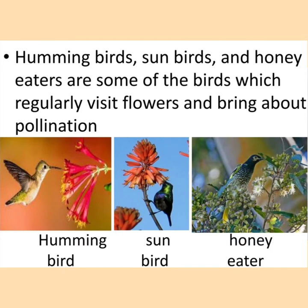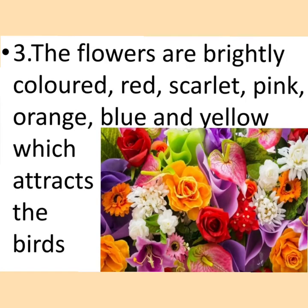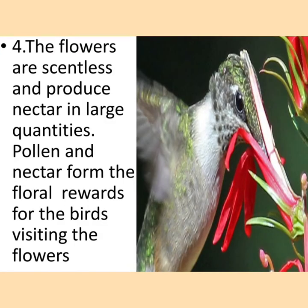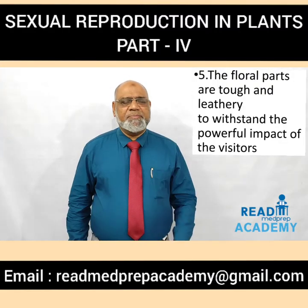What are the characteristic features of ornithophilous flowers? The flowers are usually large in size, tubular or cup-shaped or urn-shaped. The flowers are brightly colored — scarlet, pink, orange, blue, and yellow — which attracts the birds. The flowers are scentless and produce nectar in large quantities. Pollen and nectar form the floral rewards for the birds visiting the flowers. The floral parts are tough and leathery to withstand the powerful impact of the visitors.